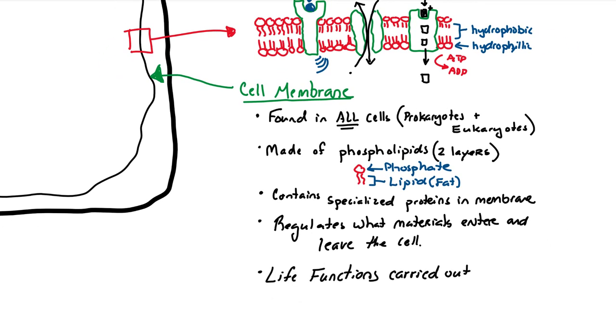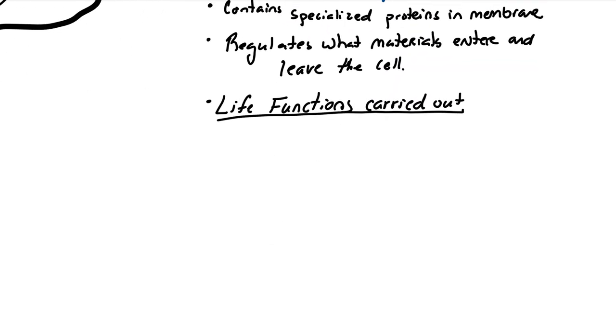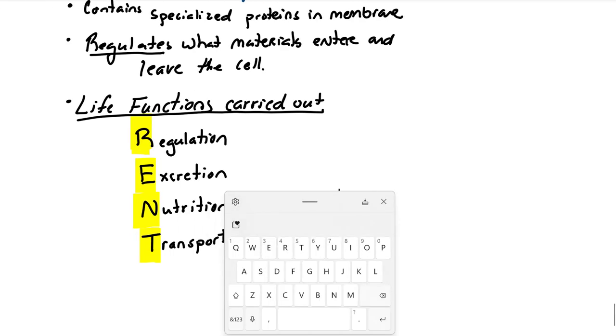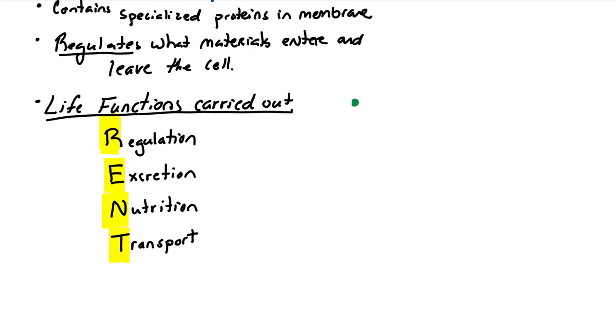That brings us to the life functions that are carried out by this thing. The cell membrane carries out regulation, meaning it controls what goes in and out. Excretion, because it controls what goes out. Nutrition, because it controls what comes in. And transport, because it controls what goes in and out. Spells out a little acronym, RENT.